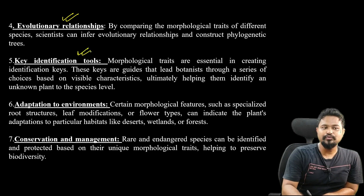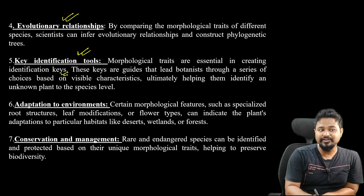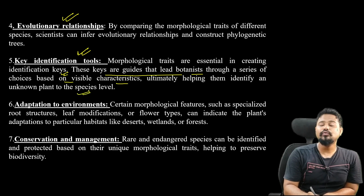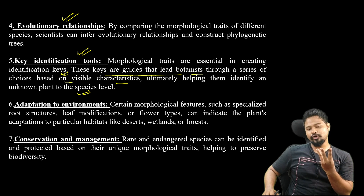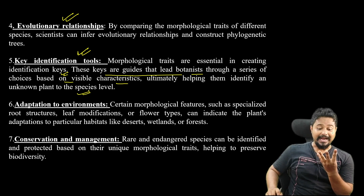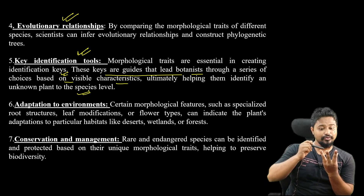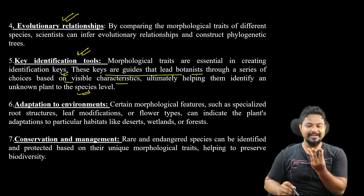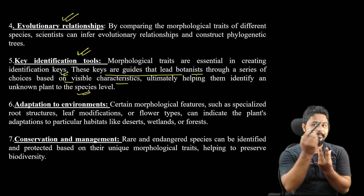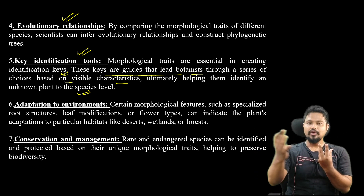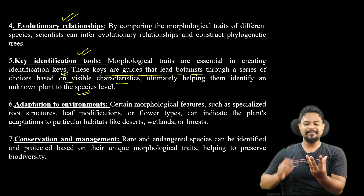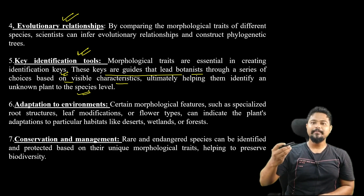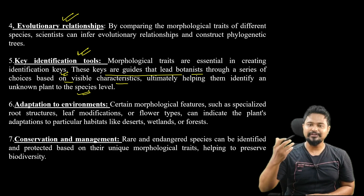The next role is key identification tools. Morphological traits are essential in creating identification keys. These keys are guides that lead botanists through a series of choices based on visible characters, ultimately helping them identify an unknown plant to the species level. We also use herbarium specimens as reference material to place and relate plant specimens correctly.